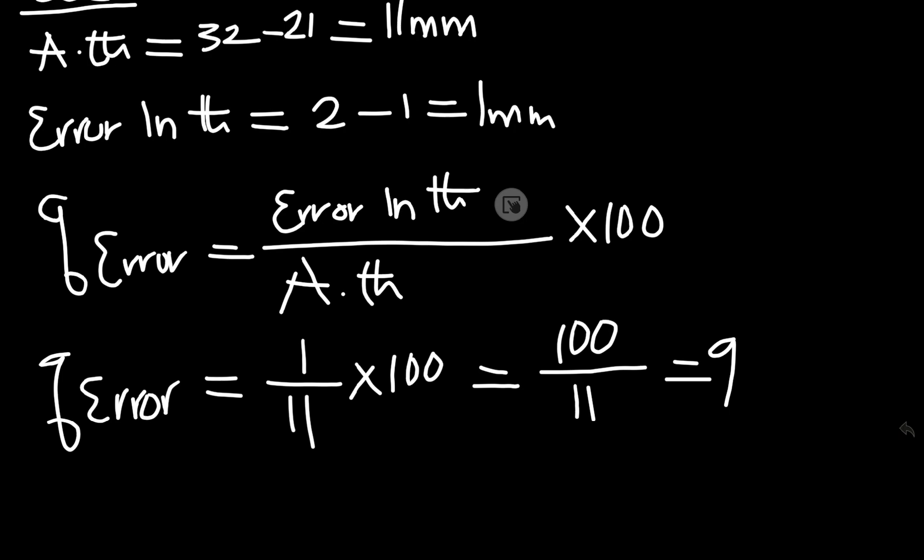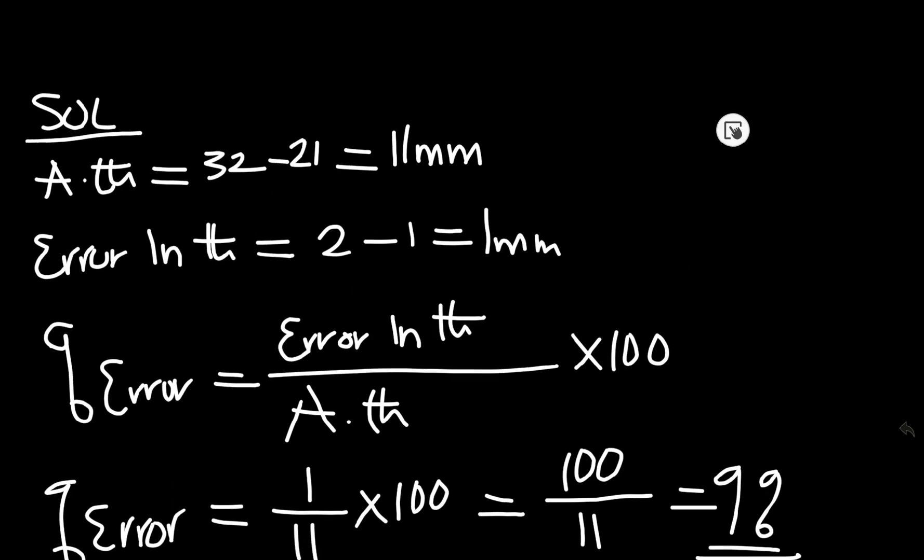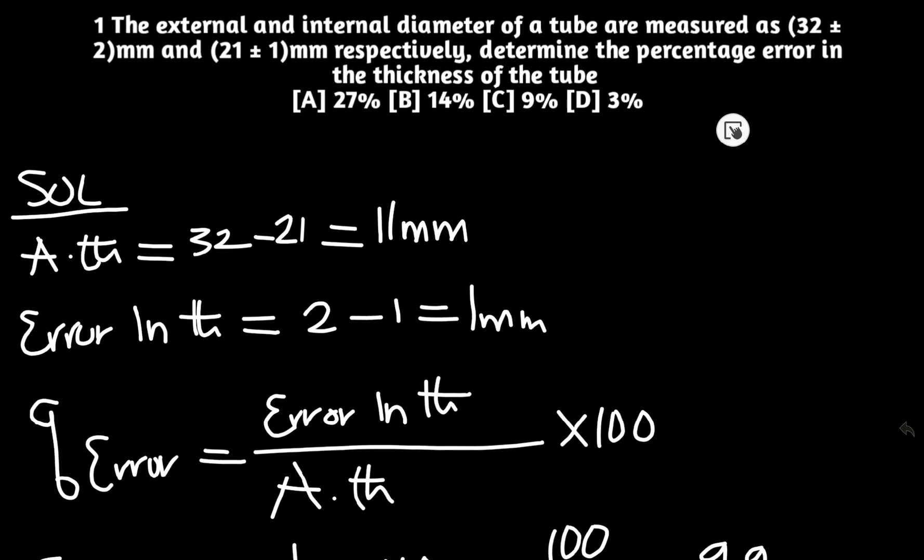If you divide 100 divided by 11, you will approximately get 9 percent. So your answer now: 9 percent. Now we'll go back and check our options. Whether 9 percent is in the options, mark it out. Option C, 9% is the answer.